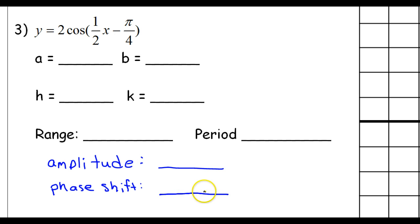Now, I'm adding in a couple words down here. They have this A, B, H, and K business happening, but I need to know the amplitude, the phase shift, and those aren't always the same thing.